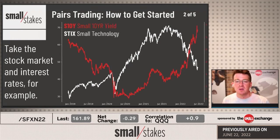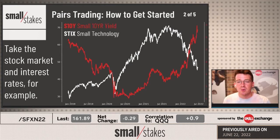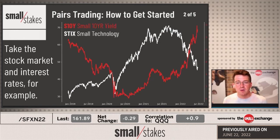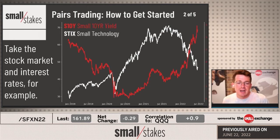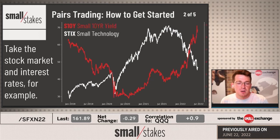One of the most popular pairs trades out there is stocks versus bonds. When stocks are doing well, bond prices tend to move lower — or interest rates, inversely, tend to move higher. So we have the 10-year interest rate futures and the technology stock futures. Eight or nine years out of ten, you have the stock market and interest rate market moving in the same direction. That's just a traditional relationship.